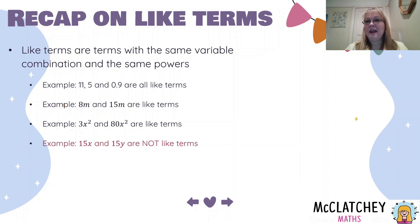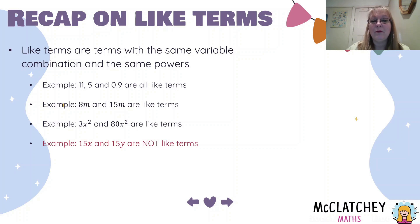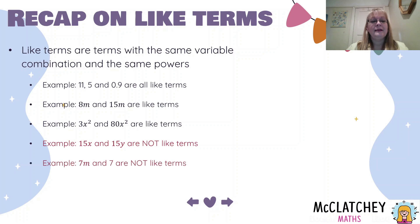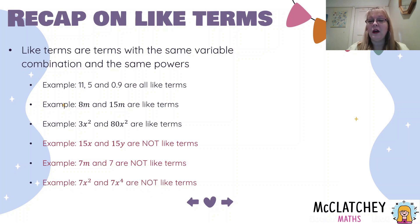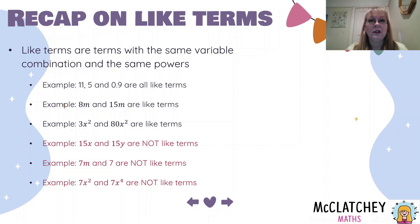Now here are some examples of what are not like terms. It's very tempting to think that 15x and 15y are like terms because the 15 is the same, but remember we're matching the letter — the pronumeral — not the coefficient, the number. 7m and 7 are not like terms even though they both have a 7, because one has an m and the other doesn't. And lastly, 7x squared and 7x to the power of 4 are not like terms. Even though the x is the same, the power is different, so they are not like terms.